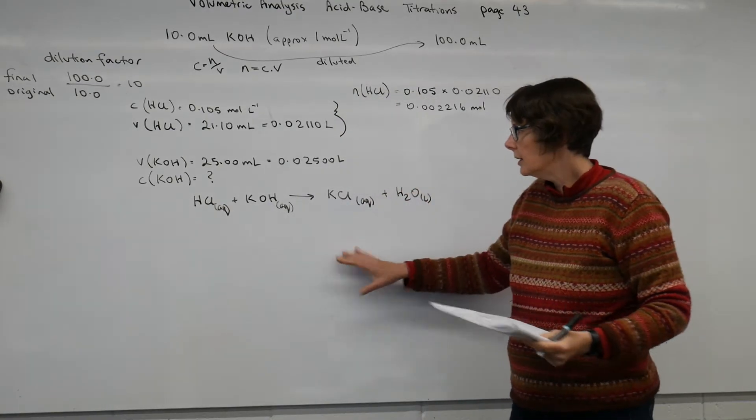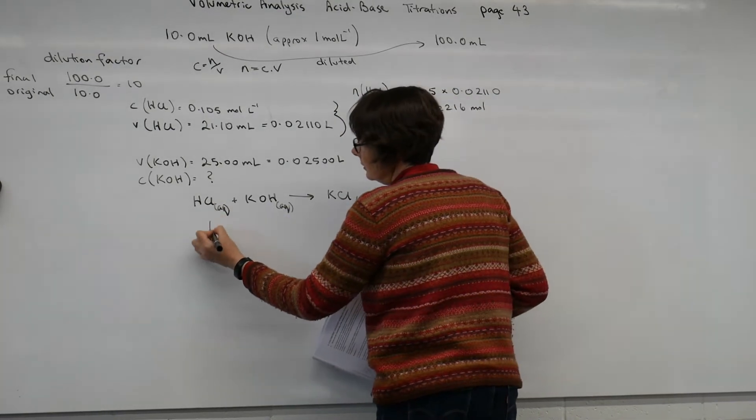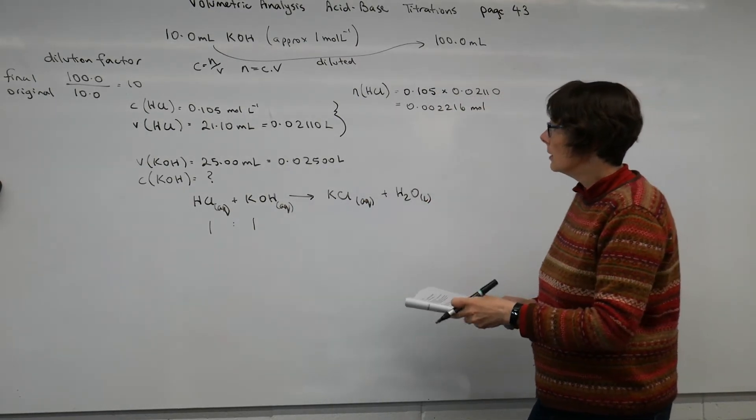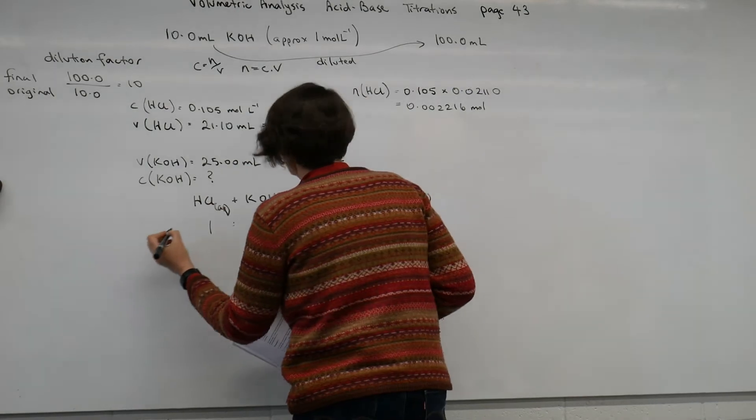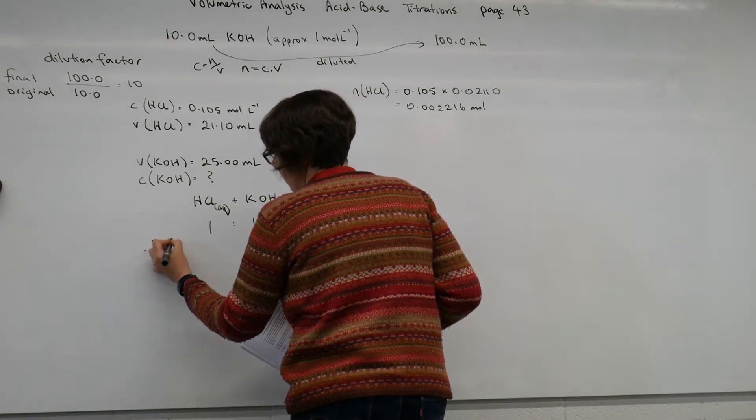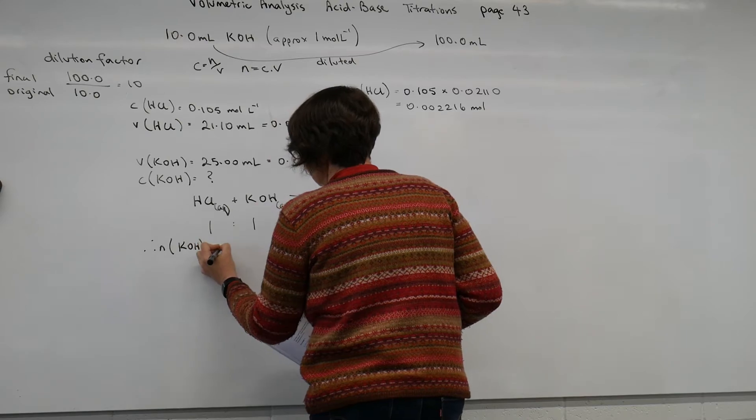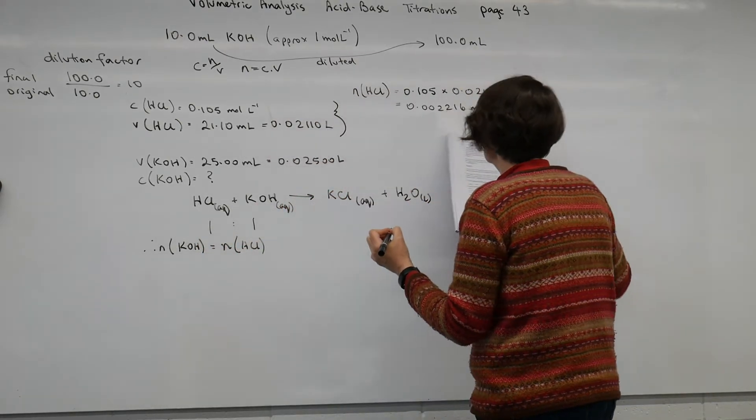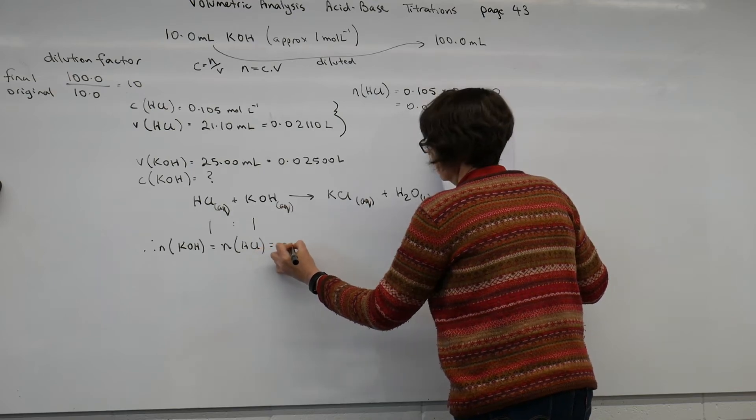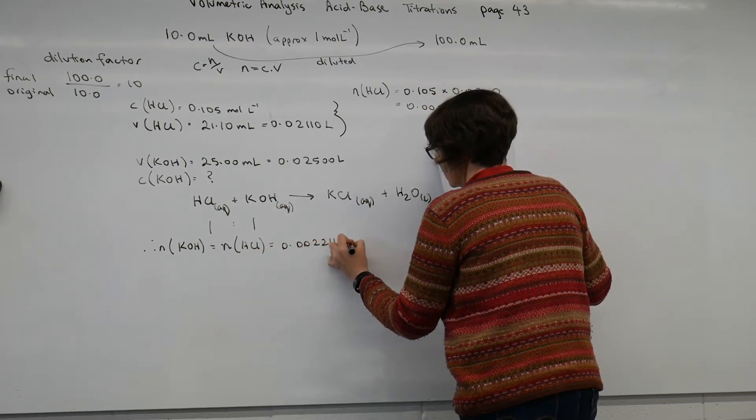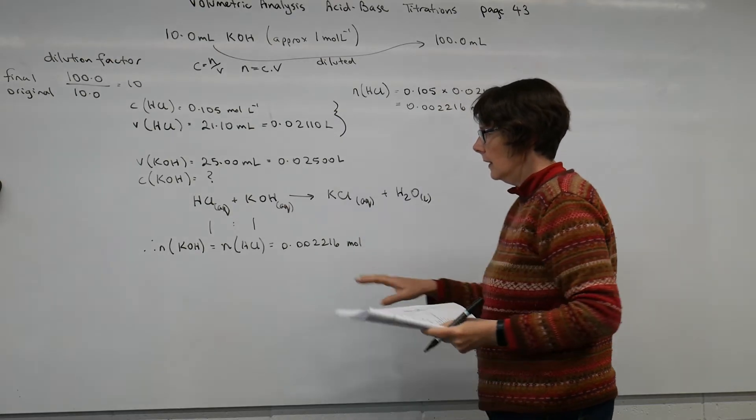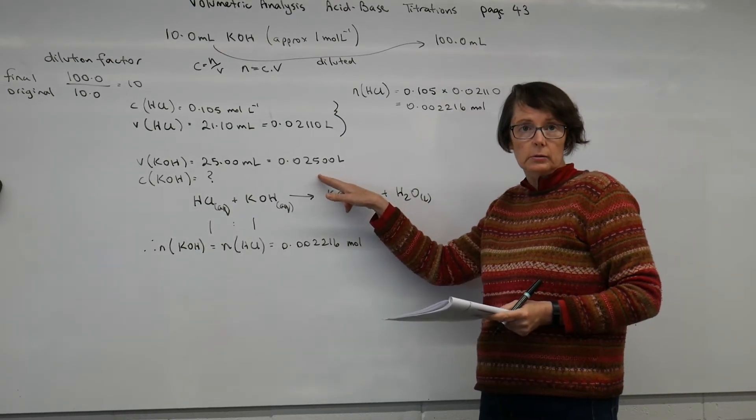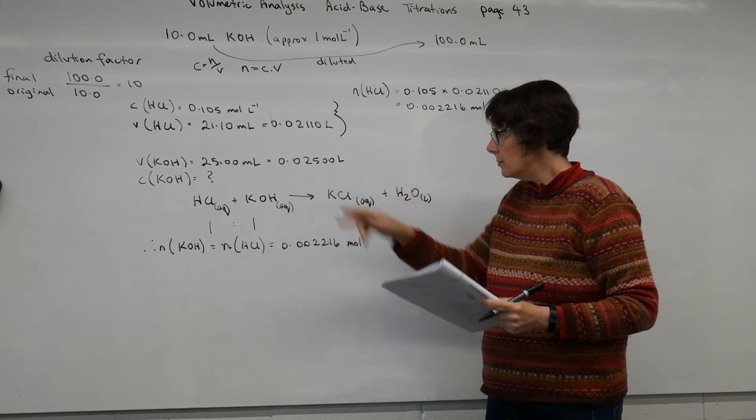And I can see that the acid and the base are in a one to one ratio. And so therefore, I know the moles of potassium hydroxide is equal to the moles of the hydrochloric acid, which is this.